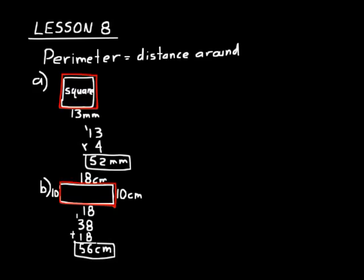There are different ways to work out these perimeter problems. I've shown you one way where you walk around the perimeter and add the numbers as you go. If you need to show more work, you can add the length of each side together: write 10 plus 18 plus 10 plus 18. You can add in pairs — 10 plus 18 is 28, and 10 plus 18 again is 28 — then add those to get 56. Use whichever method makes more sense to you.